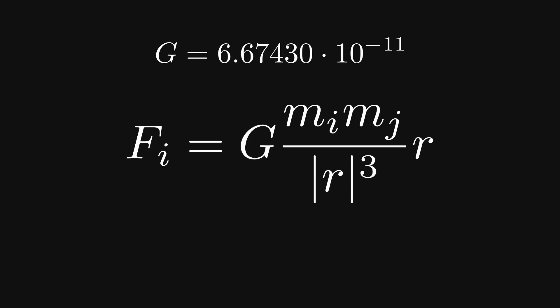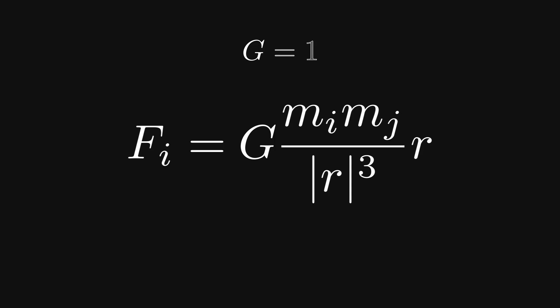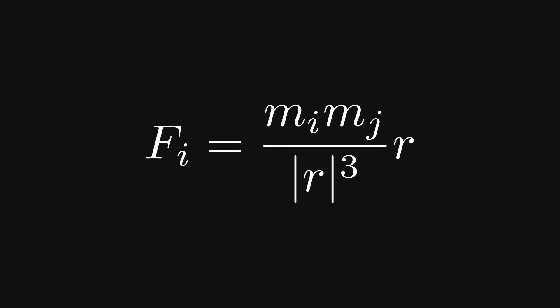Instead, we will set our simulation's gravitational constant to 1, which not only resolves those issues, but also allows us to ignore it entirely.